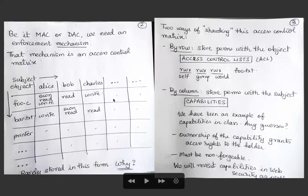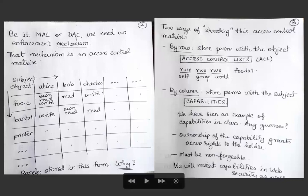For example, Alice owns foo.c and can read and write it; Bob can read it but not write it; Charles can write and read it. The principal difference between MAC and DAC is essentially in who can fill up entries in this access control matrix. In a MAC-based system, entries are pre-filled by the system administrator and cannot be deleted. In a DAC-based system, the resource owner provides those read-write permissions.